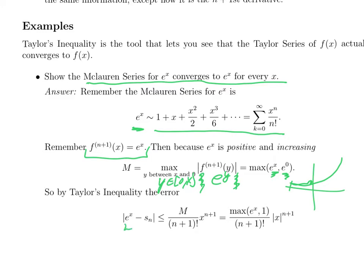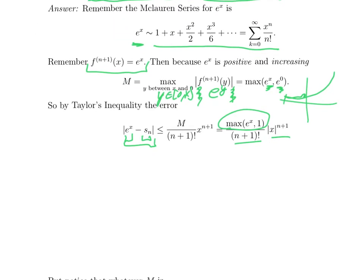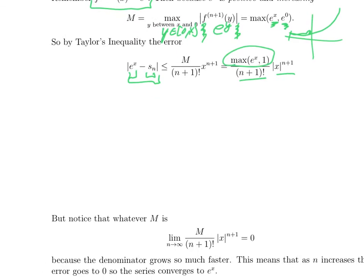And if that max of those two values confuses you, don't worry about it. Just assume x is positive and put e to the x in there. So Taylor's inequality tells you that the thing we want minus our approximation, the absolute value of the difference, is bounded by this number. So whatever e to the x is, or maybe 1, whichever is bigger, divided by (n+1) factorial over absolute value of x to the (n+1).